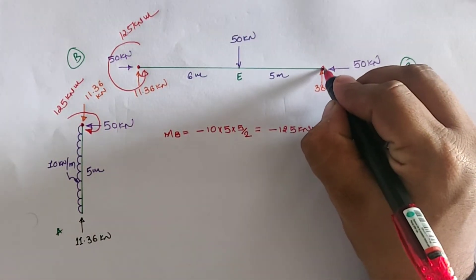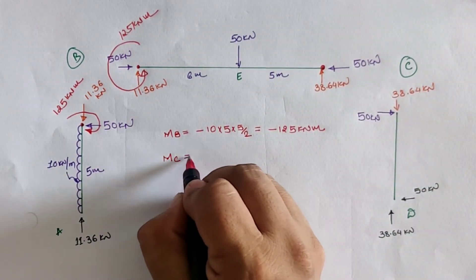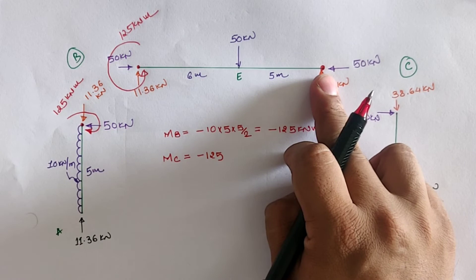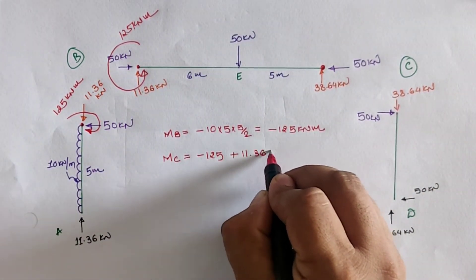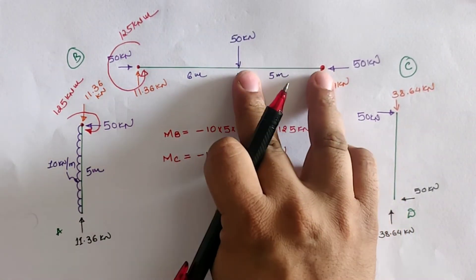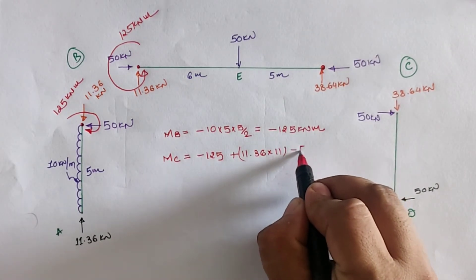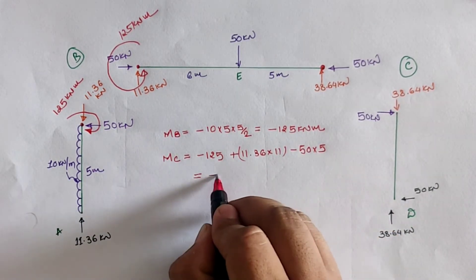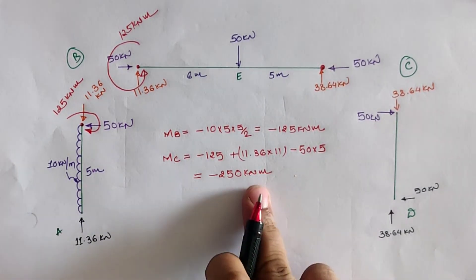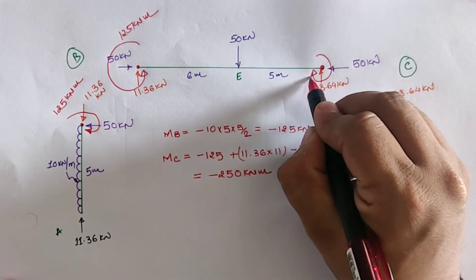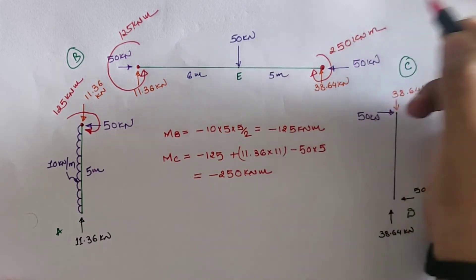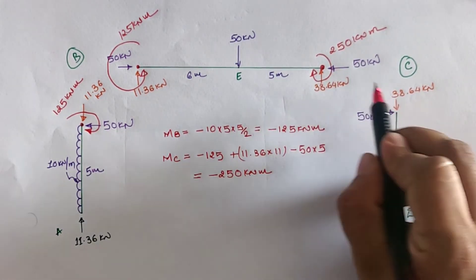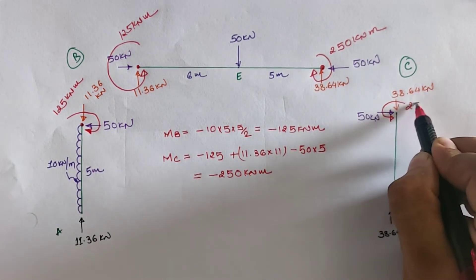Taking the moment at location C in member BC: the anticlockwise 125 kNm moment gives −125. Adding 11.36 × 11 (clockwise) and −50 × 5 (anticlockwise): the total moment at C = −250 kNm. The generated moment is anticlockwise, so we plot it as clockwise with a value of 250 kNm. Since there is no external moment at C in the given frame, the opposite anticlockwise moment of 250 kNm is applied at C.